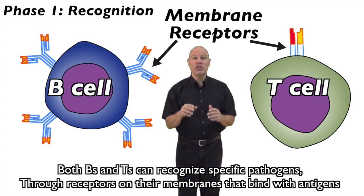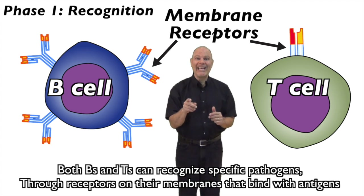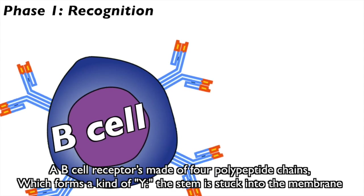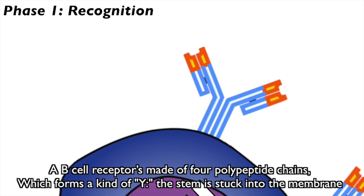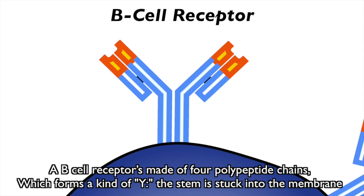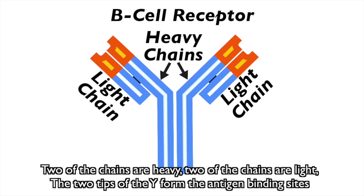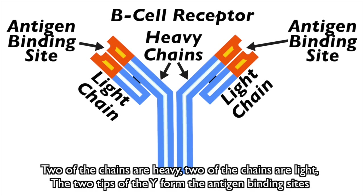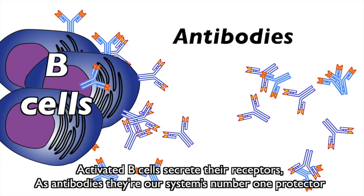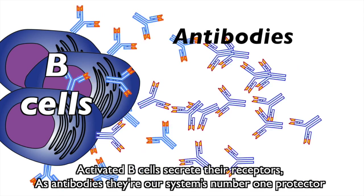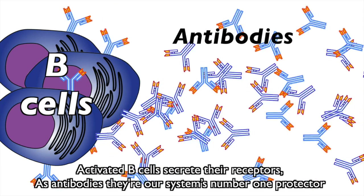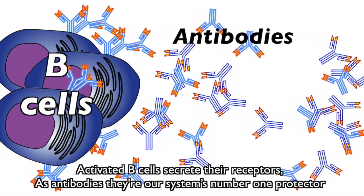Both B's and T's can recognize specific pathogens through receptors on their membranes that bind with antigens. A B-cell receptor is made of four polypeptide chains which forms a kind of Y — the stem is stuck into the membrane. Two chains are heavy, two chains are light. The two tips of the Y form the antigen binding sites. Activated B-cells secrete their receptors as antibodies — they are our system's number one protector.